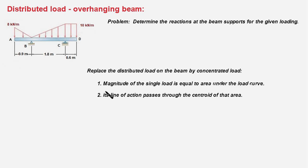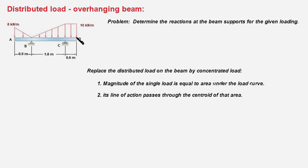The magnitude of a single load is equal to the area under the load curve. If this is the area of the distributed load, then that will be equal to the magnitude of the single load, and its line of action will be determined by the location of the centroid of this area.